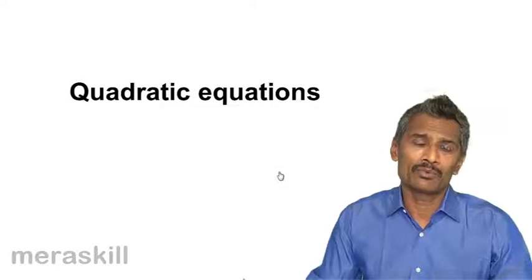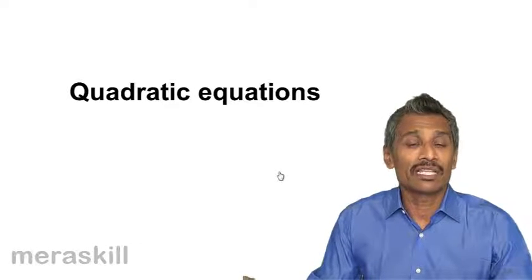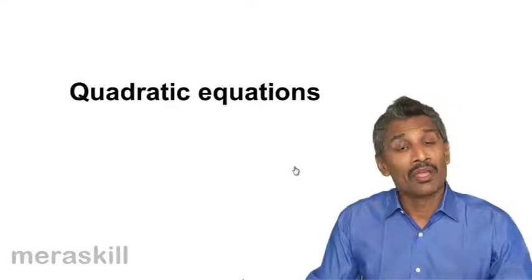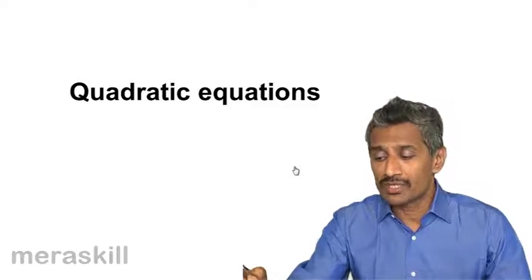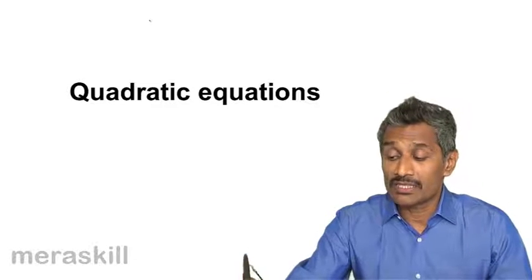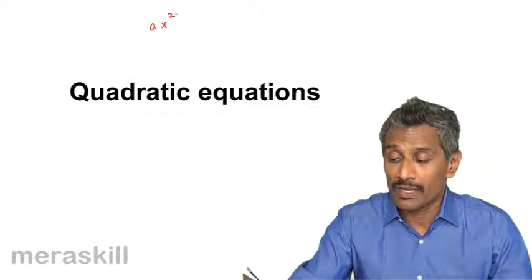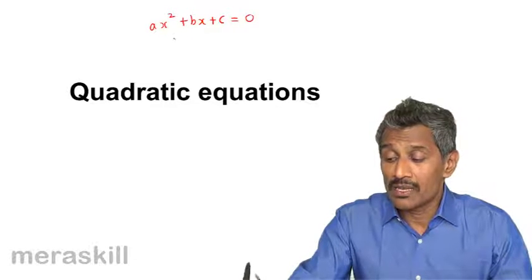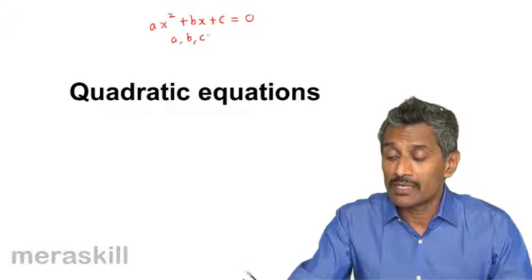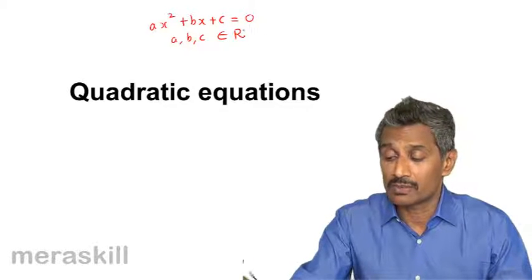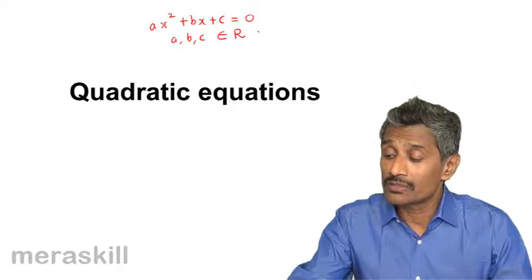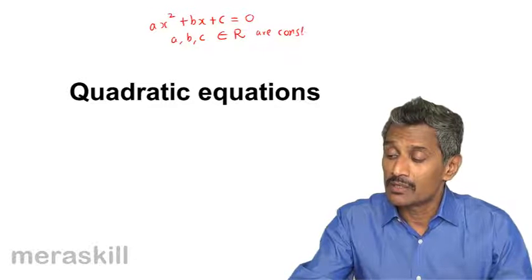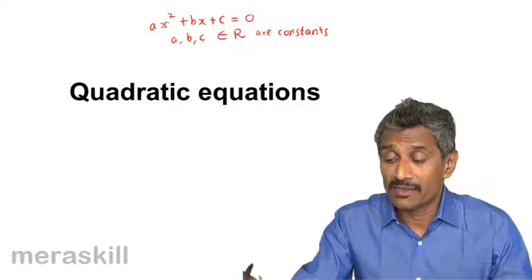Now we move to another very important concept — the quadratic equation, which I already mentioned in the introduction. A general form of a quadratic equation is of the form AX squared plus BX plus C is equal to zero. Here, A, B, C all belong to the set of real numbers and they are constants, and X squared is the variable.